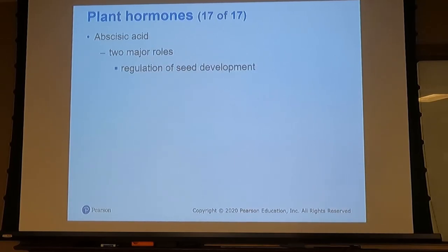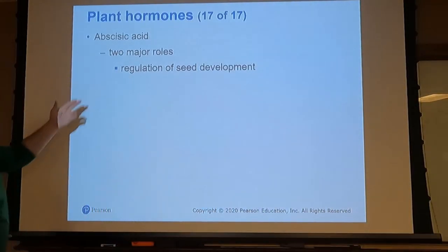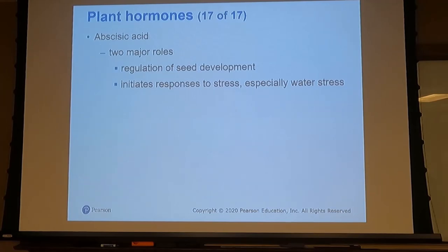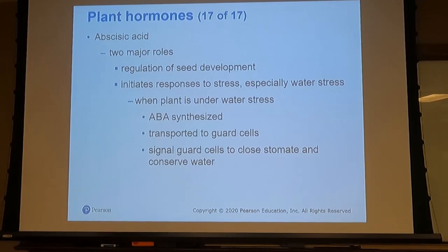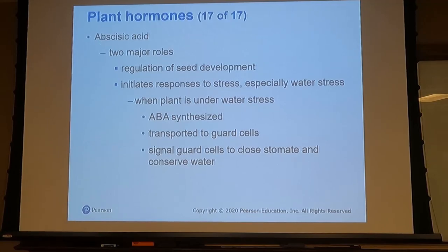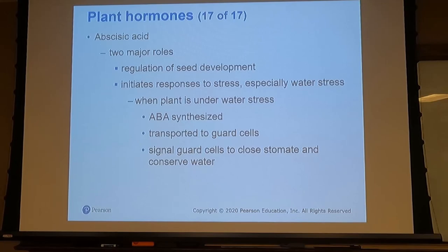The last plant hormone is abscisic acid, or ABA, which is mostly involved in the regulation of seed development and initiating responses to stress such as water stress. When the plant is under water stress, ABA is what closes the guard cells that encapsulate the stomata to conserve water. If there's any kind of stress, ABA signals those guard cells to close so the plant conserves its water.